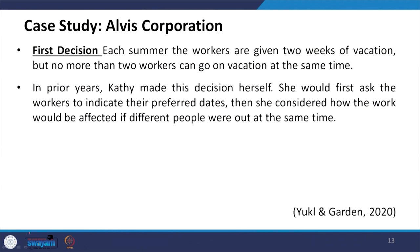For the first decision, each summer workers are given two weeks of vacation, but no more than two workers can go on vacation at the same time. In prior years, Cathy made this decision herself. She would first ask workers to indicate their preferred dates, then consider how work would be affected if different people were out simultaneously.